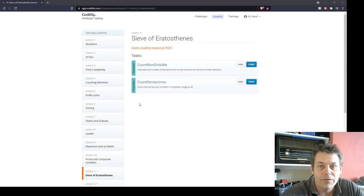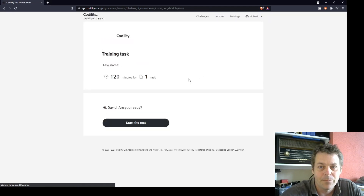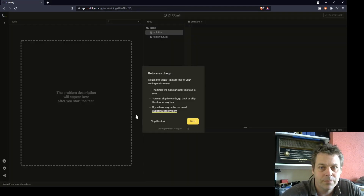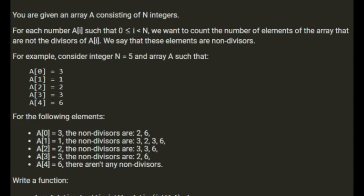So now I'm going to have a go at the first exercise in lesson 11 of Codility, it's called Count Non-Divisible. You're given an array A of N integers. For each number A[i], such that 0 is less than i is less than N, we want to count the number of elements of the array that are not divisors of A[i]. We say that these elements are non-divisors.